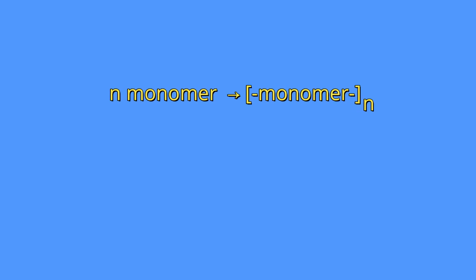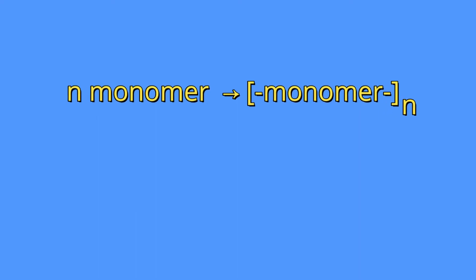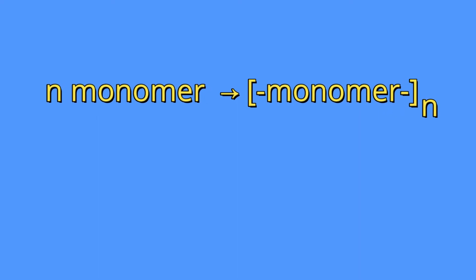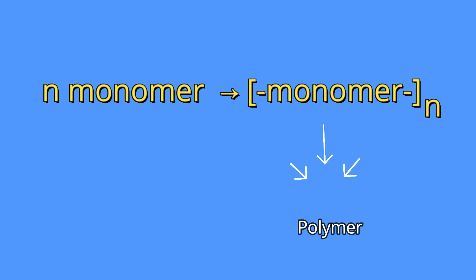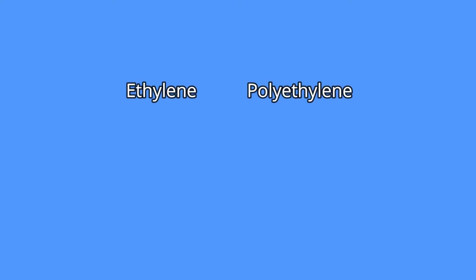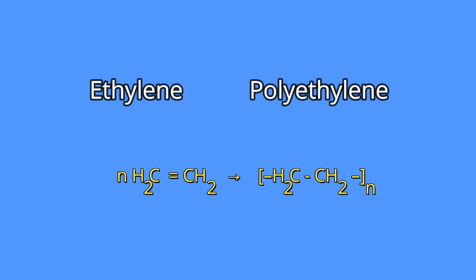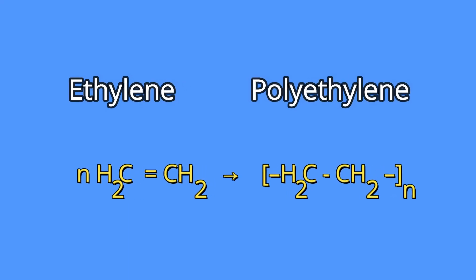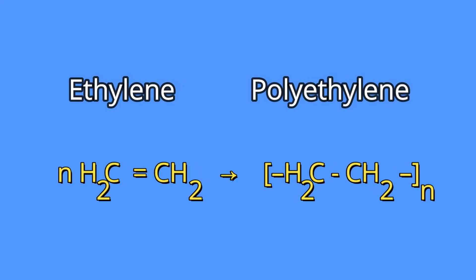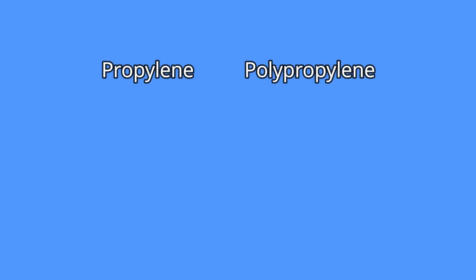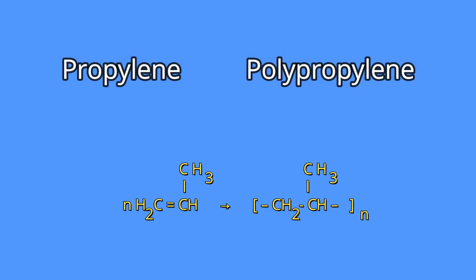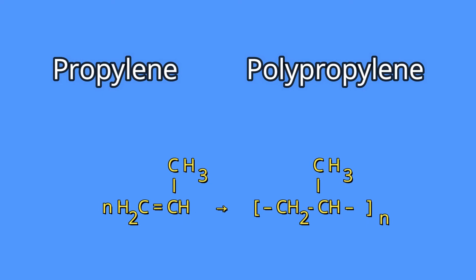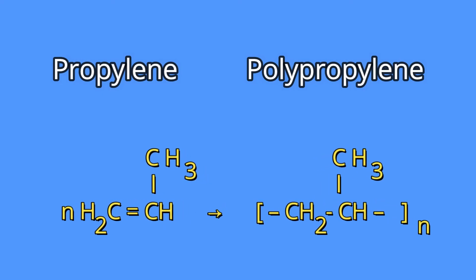The formation of plastic can be represented by the generic equation of the chemical union of monomers that originate the polymers. Polyethylene is one type of plastic and is formed by the monomer ethylene. Polypropylene is another type of plastic and is formed by the monomer propylene.